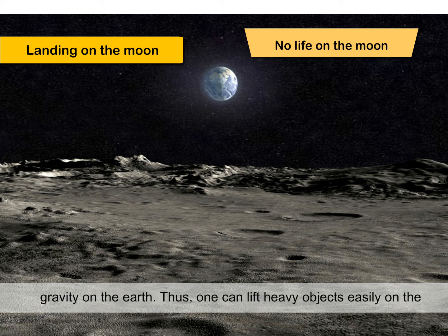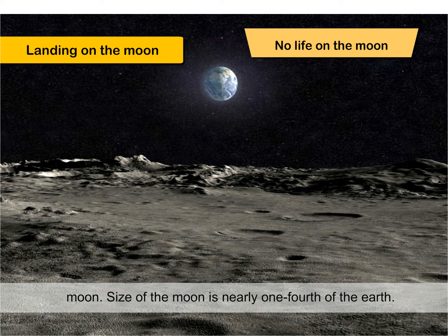Gravity on the moon is one-sixth of the gravity on the earth. Thus, one can lift heavy objects easily on the moon. Size of the moon is nearly one-fourth of the earth.